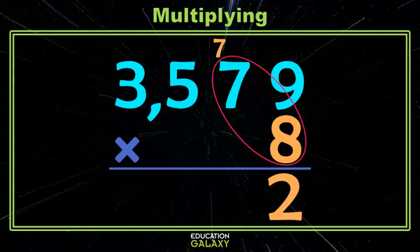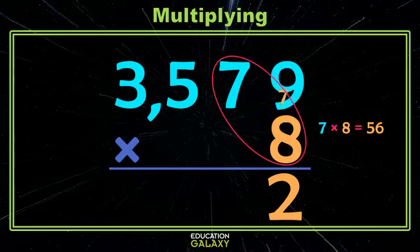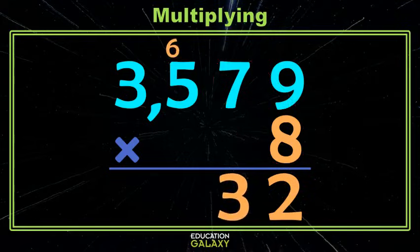Now we multiply the 7 and the 8, which we know is 56. Don't forget the 7 we carried. We need to add that to our 56, which gives us 63. That won't all fit, so we put the 3 in the tens and we carry the 6.